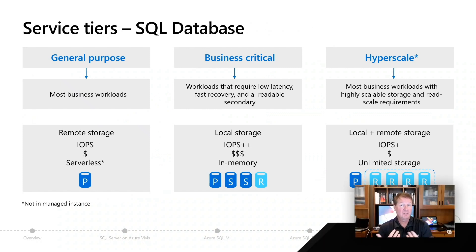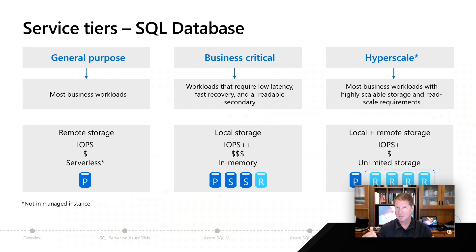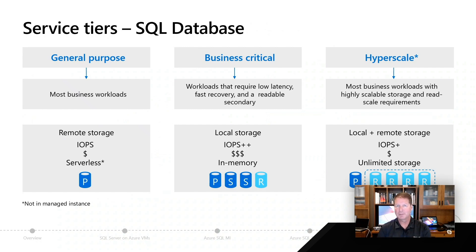IOPS are going to be similar to what you have with something like business critical, where you're going to get a lot more IOPS than from general purpose. But here's the key: you're going to get unlimited storage. Today we support even up to 100 terabyte databases in Hyperscale, and we expect that to go even further. Scaling operations are constant as you're changing your scaling needs — the time it takes to scale from a couple of CPUs to 80 CPUs is a constant time.